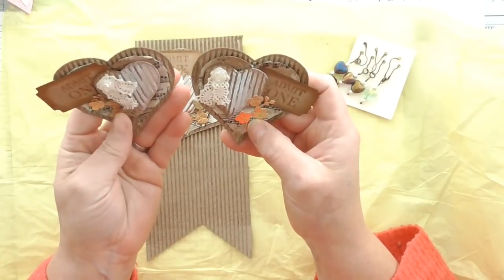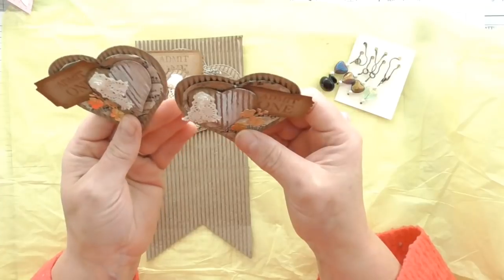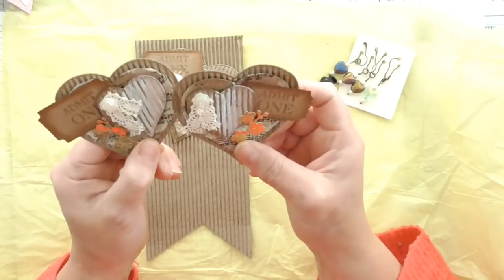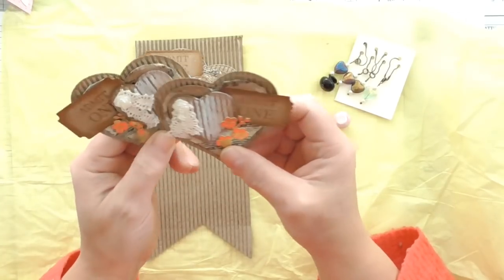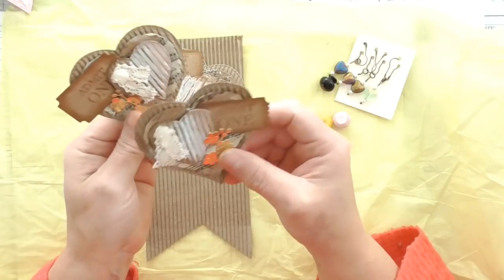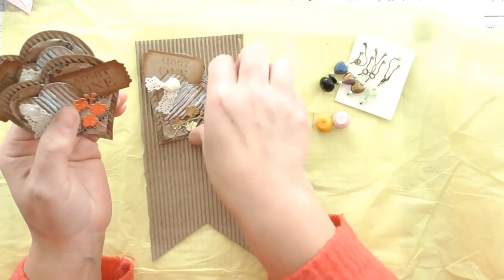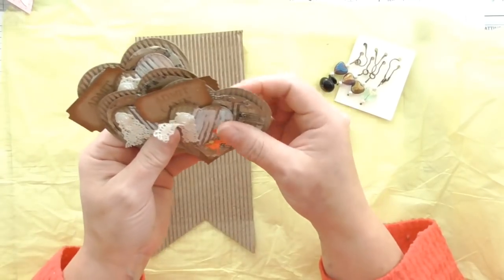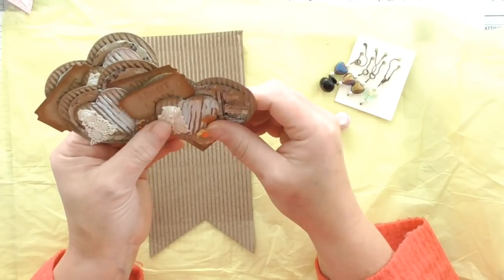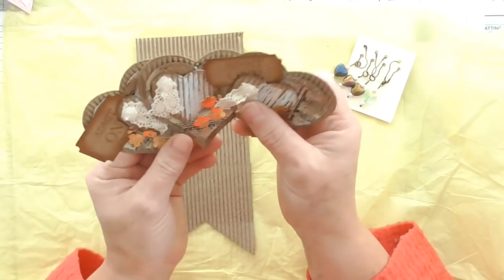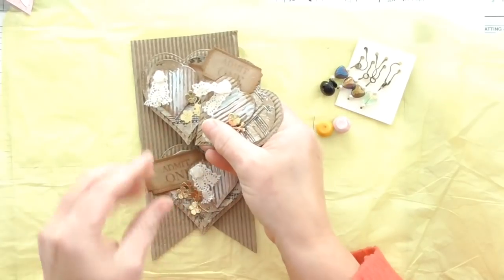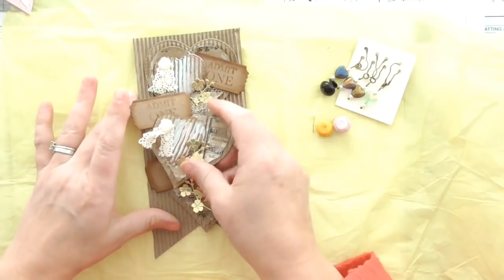I think I might have a go at making some. I do have some layering heart dies somewhere. They're just not stitched edged. But yeah, that's a lovely, lovely idea. No doubt Kay will have a video sharing these as well. So go and have a look. So that is my latest haul from the lovely Kazikins.